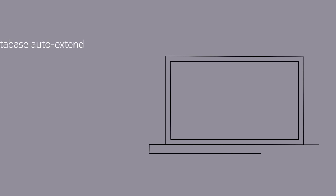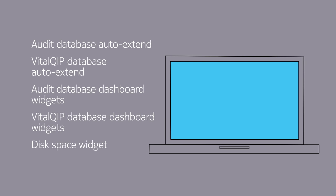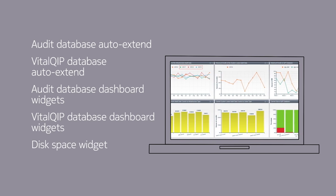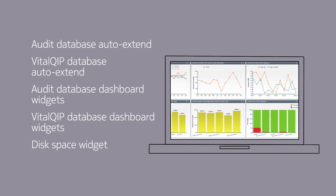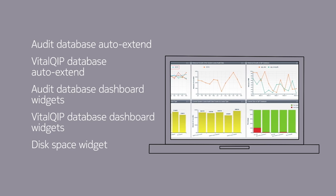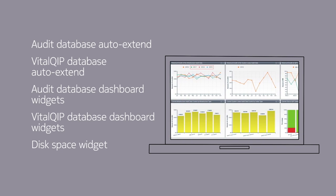Vital QIP 8.1.1 enhances and simplifies deployment by automatically extending databases for both infrastructure and audit purposes. Dynamic expansion of database partitions fixes the largest cause of solution outages. The new dashboard widgets track the utilization of the database, disk space, as well as tracking growth trends.